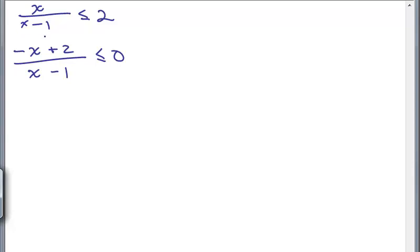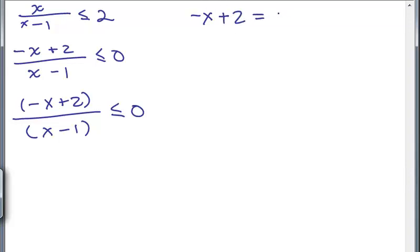Here was our original x over x minus 1 is less than or equal to 2. We have a single fraction and then it says to factor. Well, the numerator can't be factored any further and the denominator can't be factored any further either. People do interesting things at this point. I'm just going to leave it in this factored form. Negative x plus 2 is one factor and x minus 1 is the factor in the denominator. Of course, negative x plus 2 can be written as 2 minus x. If you'd like, you could write that as 2 minus x. That's perfectly fine. That's up to you.